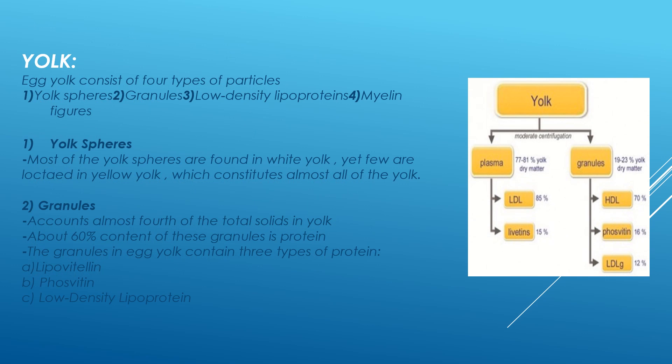The yolk consists of four types of particles: yolk spheres, granules, low-density lipoproteins, and myelin figures. They are dispersed in a plasma containing livetin, a globular protein, and low-density lipoprotein. Most of the yolk spheres are found in the white yolk, yet a few are located in the yellow yolk, which constitutes almost all of the yolk. Granules account for almost one-fourth of the total solids in yolk, and about 60 percent of the content of these granules is protein.